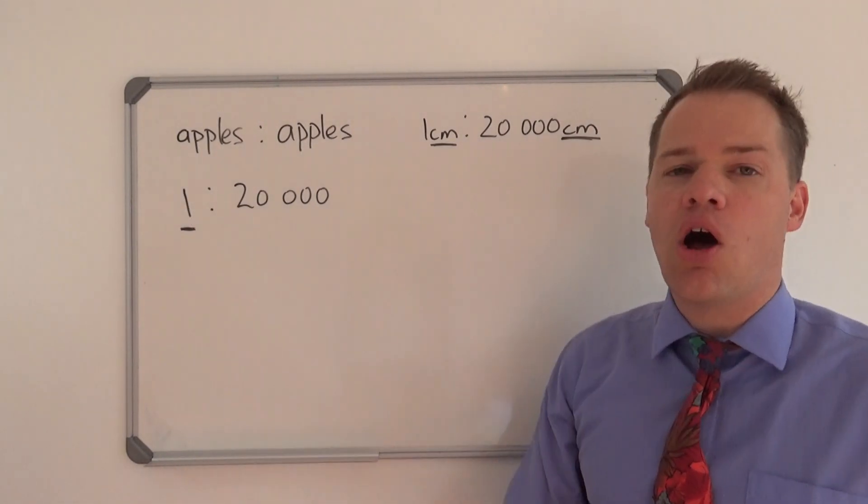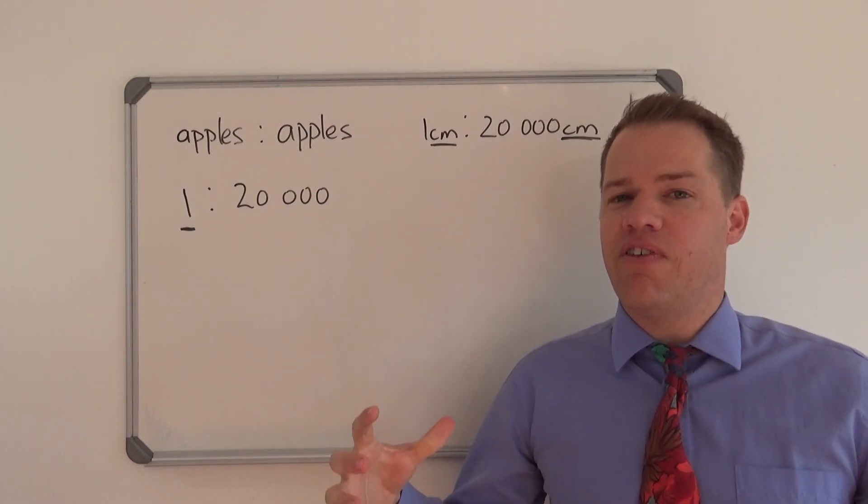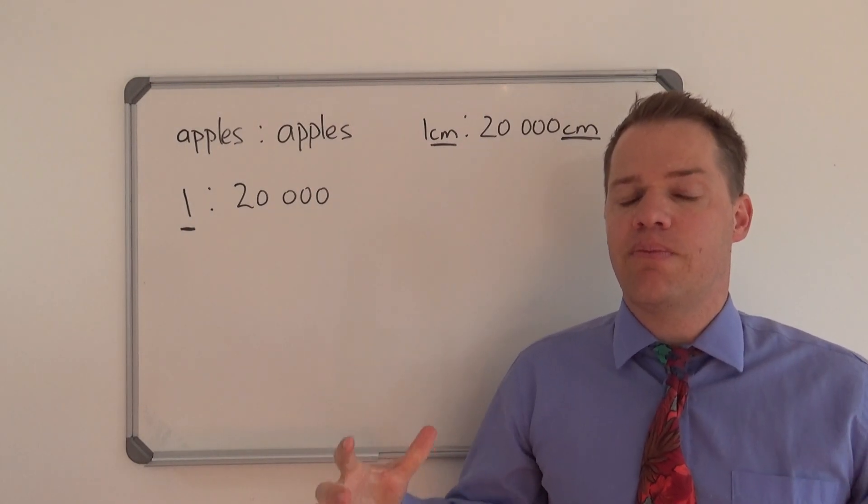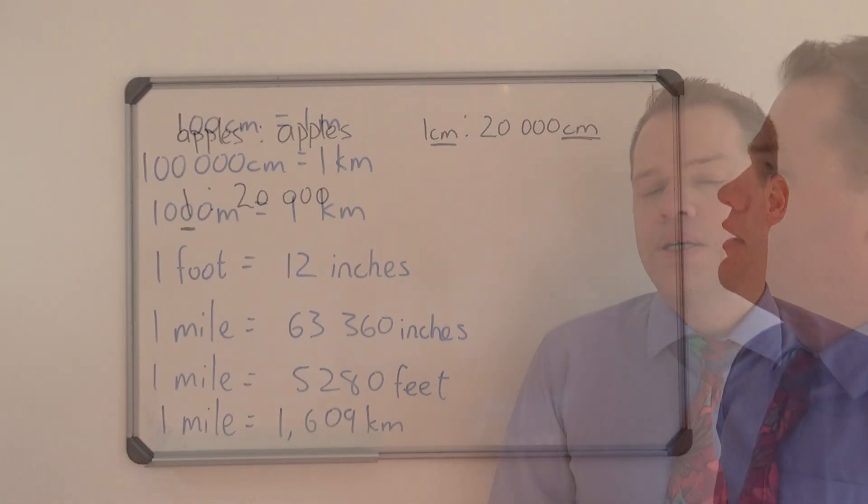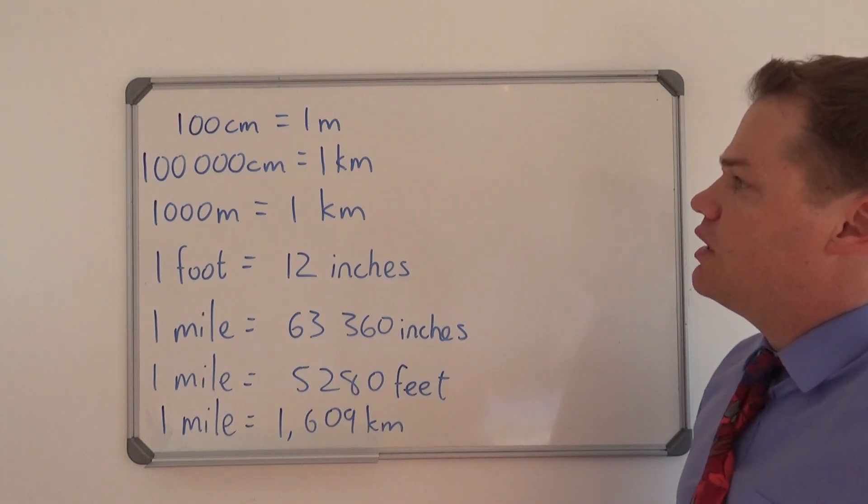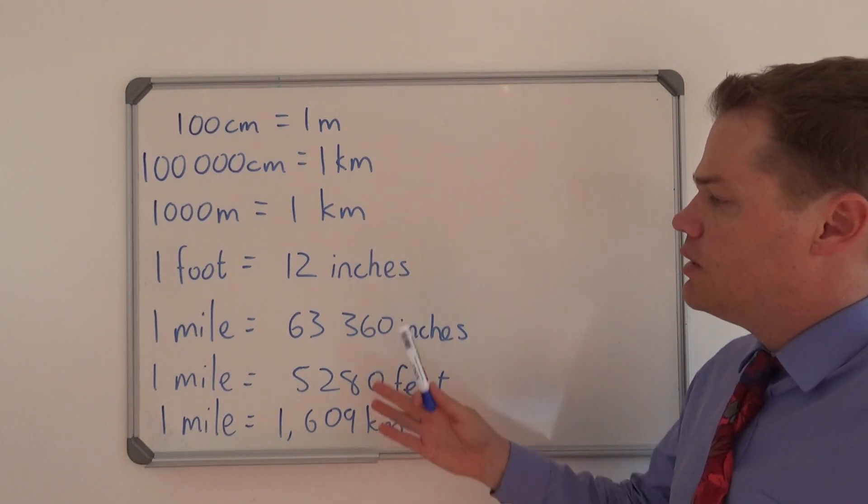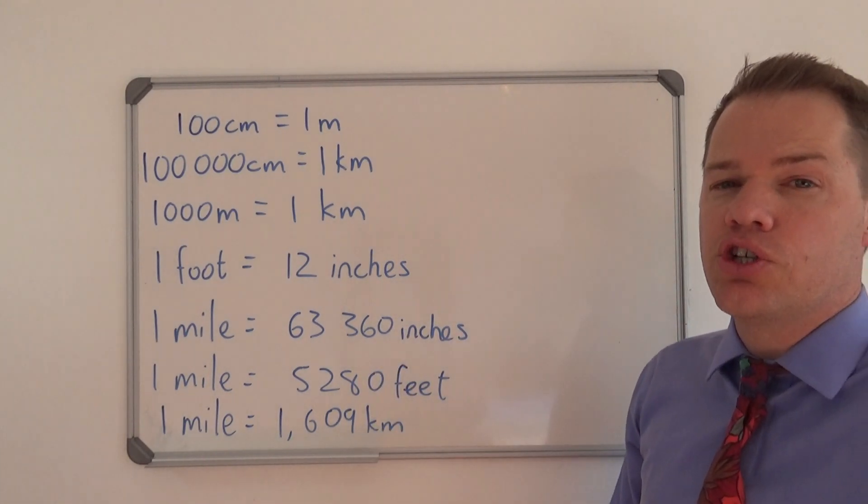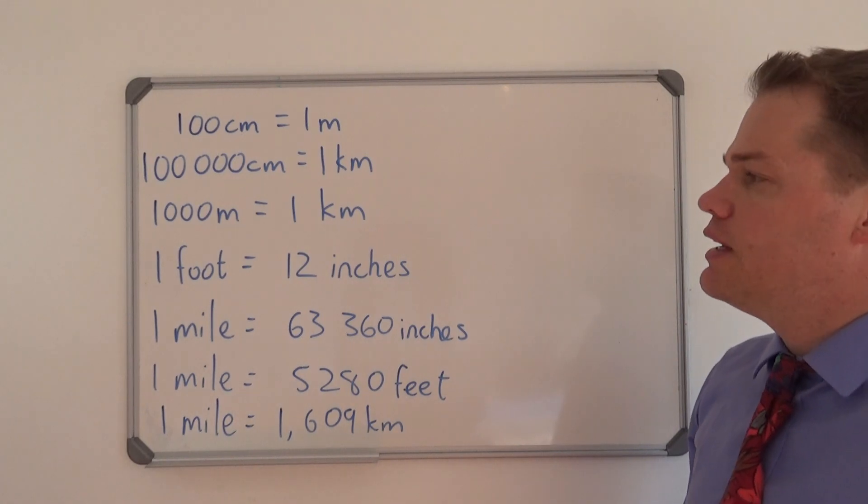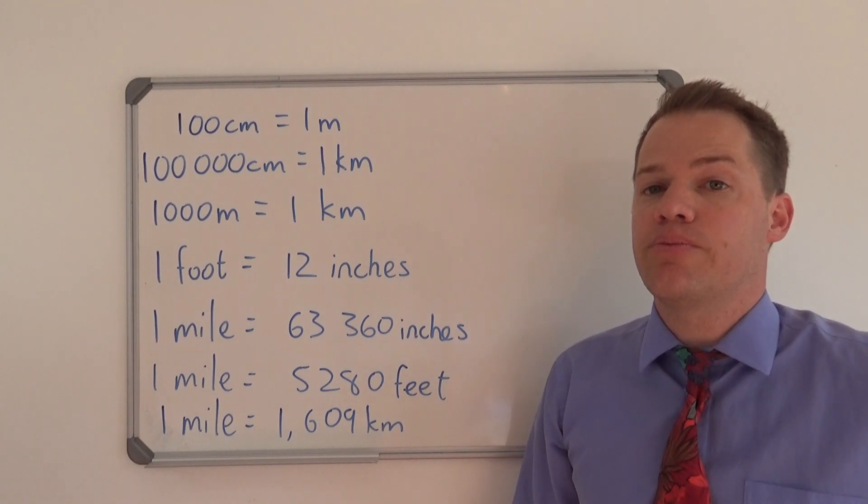And the second thing we need to have is a 1 on the left side of the colon. We want to simplify this ratio scale as much as we can. As you can see, 100 centimeters in 1 meter, 100,000 centimeters in 1 kilometer. You can read the rest of these. You can even take a screenshot if you know you will need this information, or just copy the link down in the description.